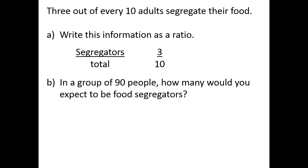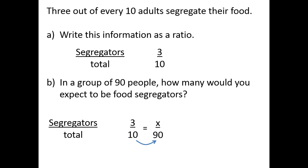If we have a group of 90 people, how many would you expect to be food segregators? Our ratio compares segregators to total people: three food segregators for every ten total people. We have 90 total people and want to know how many are segregators, so we compare x to 90. We have a proportion we can solve. Ten times 9 is 90, and 3 times 9 is 27, so in a group of 90 people, we would expect 27 food segregators. If you can't see that easy multiplier, you can always cross-multiply to get the same result.